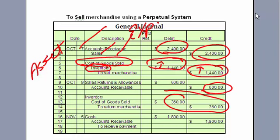Notice that instead of just reversing the sales, we use sales returns and allowances. We don't want to lose that number because if that dollar amount becomes too high — more than normal — that becomes a signal to management that they've got some kind of problems, like a catalog with wrong numbers being published so people keep ordering the wrong merchandise.